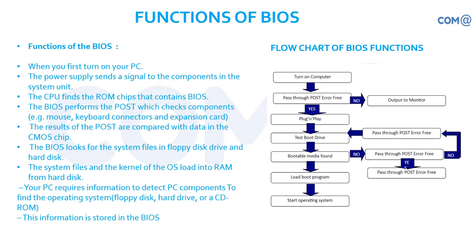We'll see how it is available in the BIOS and where to set it. This information is stored in the BIOS IC. The modified information will be available in your CMOS IC, whereas the original information is available in your BIOS.